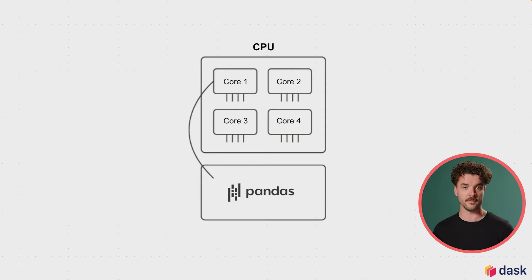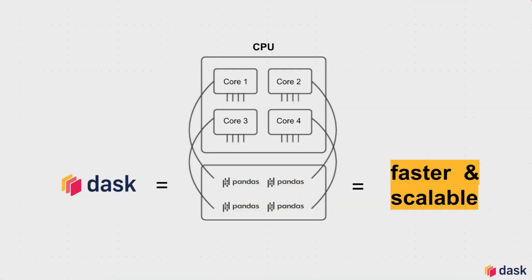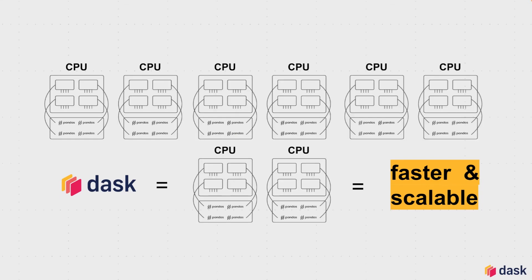If you have a computer with four cores, three of them will be sitting idle and will not be used. Dask overcomes this problem by splitting up your dataset into small chunks — just like we saw in the Amish barn raising example — and distributing that work over the multiple cores in your machine. This means all of your cores are now being used, and you're able to process the data faster. Dask can do this on a single machine, but with the same code, you can also scale Dask out to multiple machines — this would be called distributed processing.